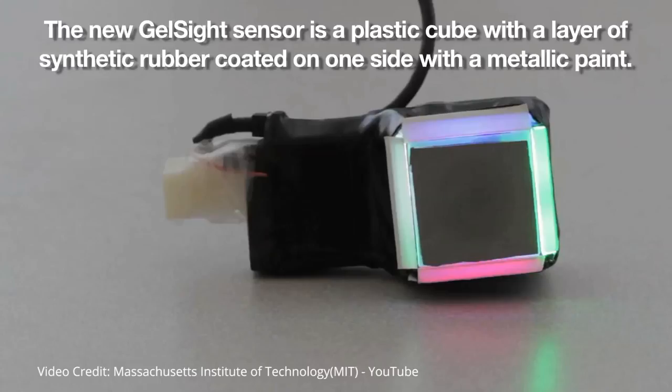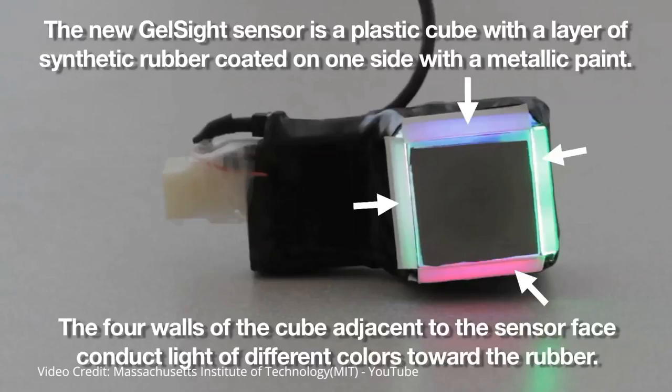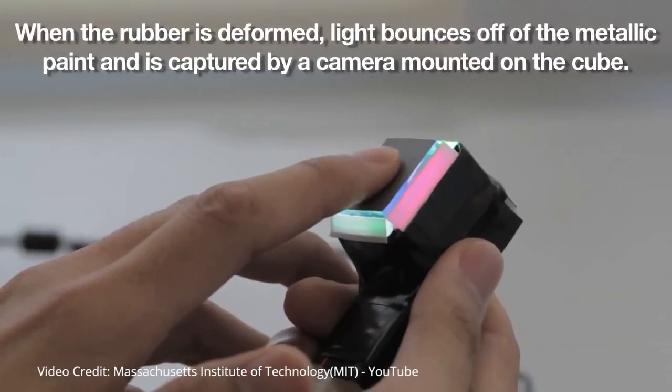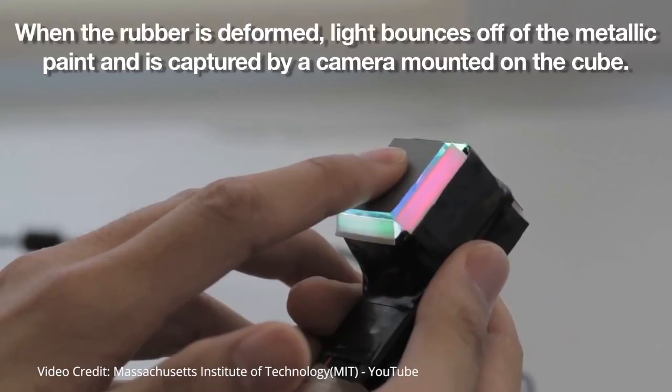The gel-site sensor itself is a low-tech solution than one might expect. It is composed of a block of transparent rubber and a metallic paint-coated face. When that paint-coated face is pressed against an object, it is able to conform to the shape of the object.